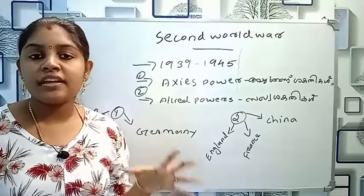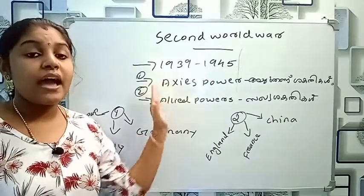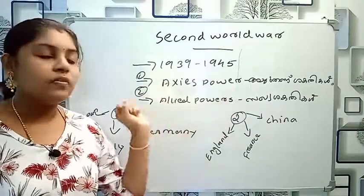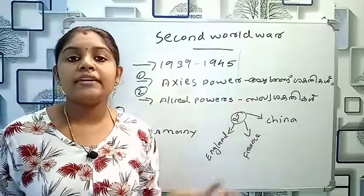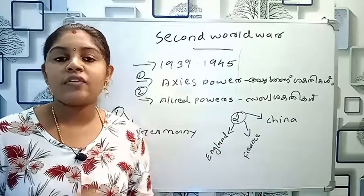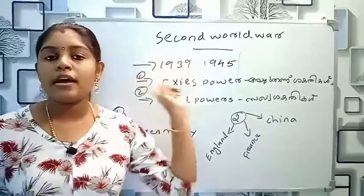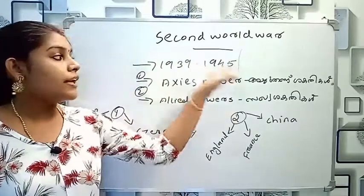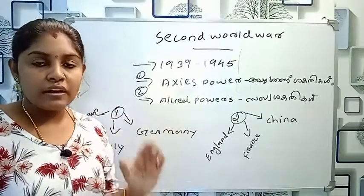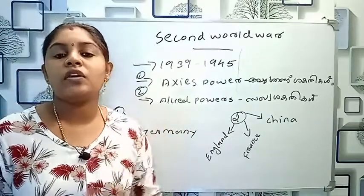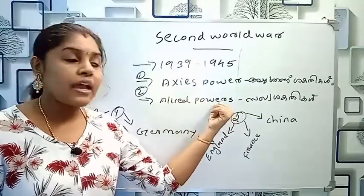There are two groups of people who fought in World War II. It is because of the Axis Powers and the Allied Powers. Axis Powers and Allied Powers.